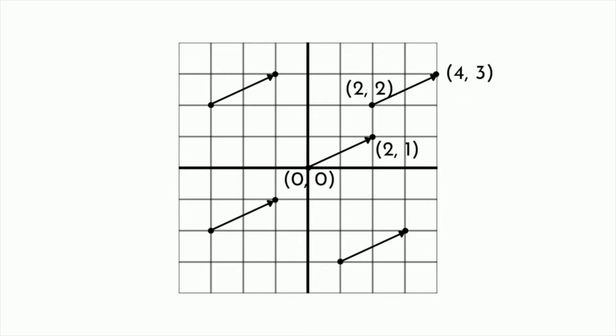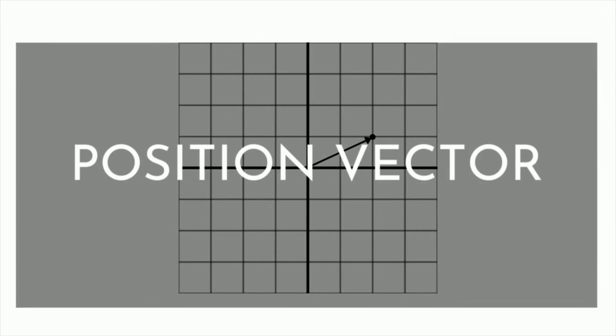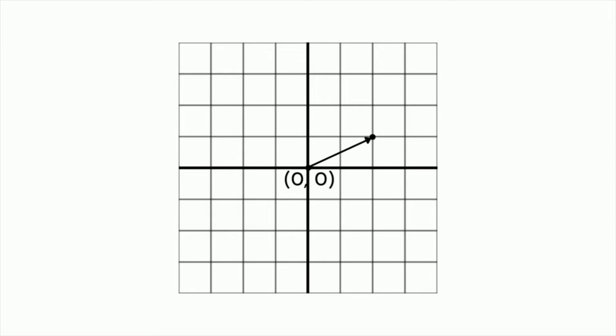However, I want to focus on this specific one right here. If we place a Cartesian vector at the origin, like this one, we call it a position vector. A position vector starts at the origin and heads in the direction of a point. And as it turns out, we can use the coordinates of the point to write the Cartesian vector.